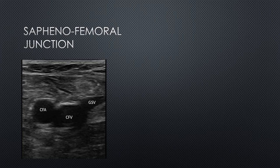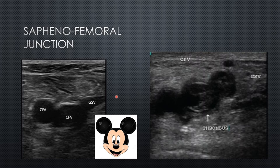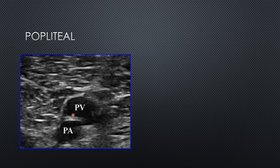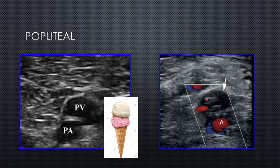The first compression point in the two-point technique is the saphenofemoral junction. Here's the common femoral vein in the middle, with the common femoral artery laterally and the great saphenous vein medially — sometimes referred to as the Mickey Mouse sign, with the vein as the head and the other two structures as his ears. Here's an example of clot: thrombus in Mickey's face and also in his left ear. The second compression point is the popliteal trifurcation, scanning from behind the knee. The most superficial structure is the popliteal vein, with the popliteal artery deep to that — sometimes called two scoops of ice cream. Here's an example of a clot: within that vanilla scoop, we can see a bright echogenic thrombus.